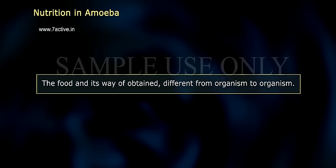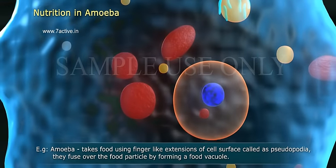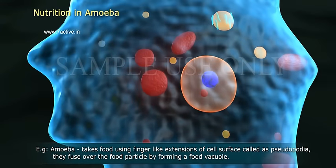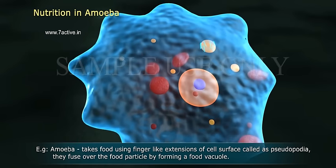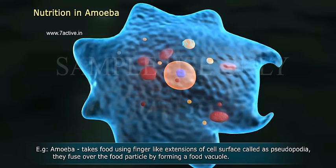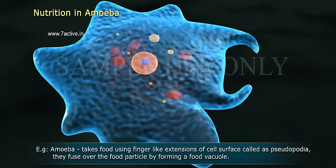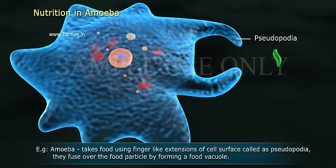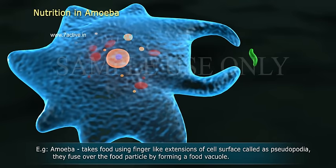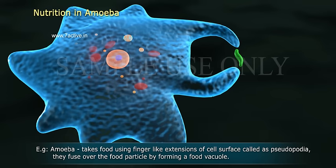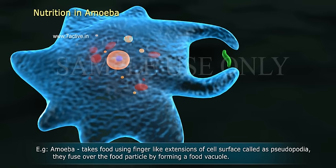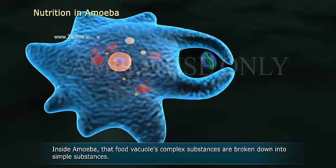Nutrition in amoeba. The food and its way of obtaining differ from organism to organism. Amoeba takes food using finger-like extensions of the cell surface called pseudopodia. They fuse over the food particle, forming a food vacuole inside the amoeba.